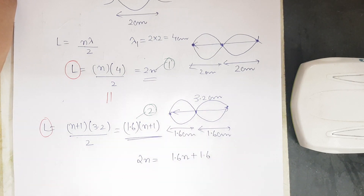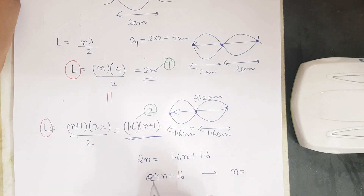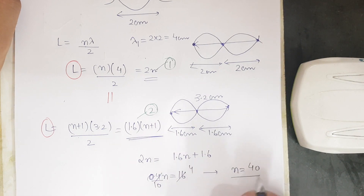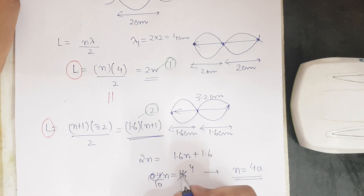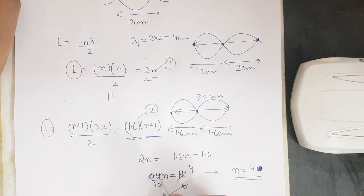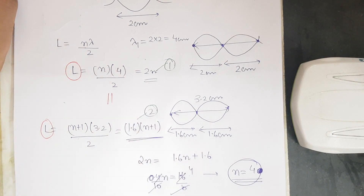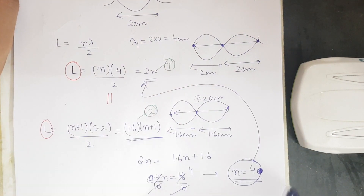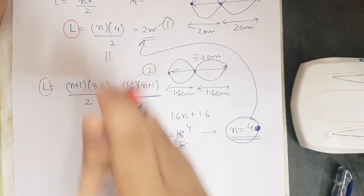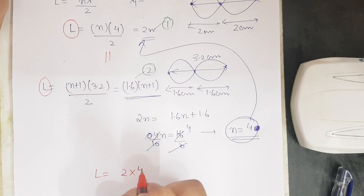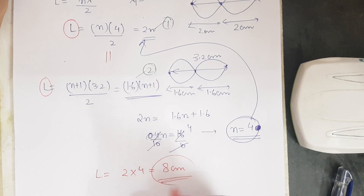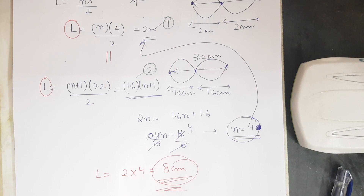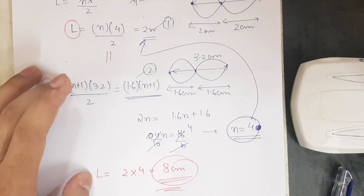Solving: 0.4n = 1.6, so n = 4. Substituting back, L = 2n = 2 × 4 = 8 cm. So the length of the string is 8 cm. These types of questions are very important for JEE Mains, so you must know how to solve them.